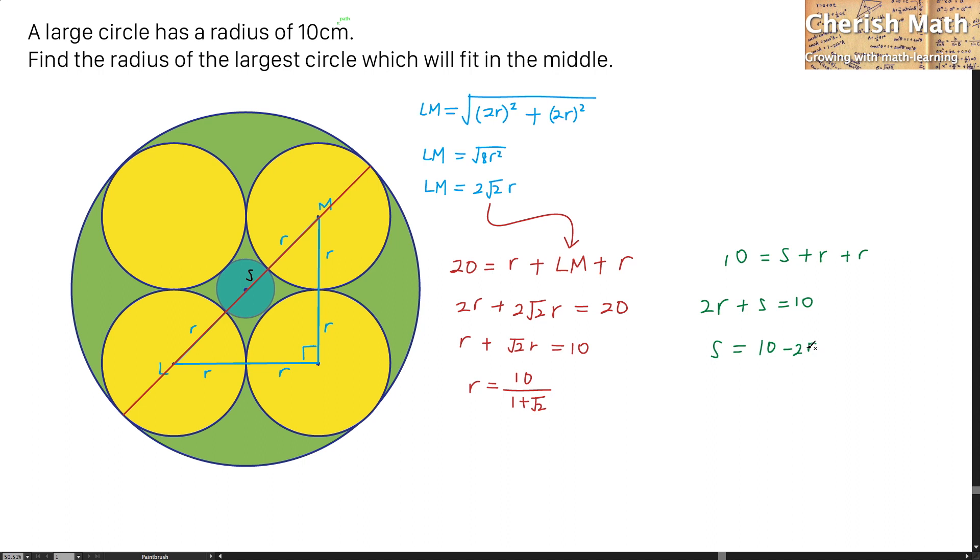We have to substitute the value of the R from here. And the value of S turns out to be 10 minus 20 divided by 1 plus square root of 2. And the value of S is in fact 1.716cm as our final answer by using the calculator.